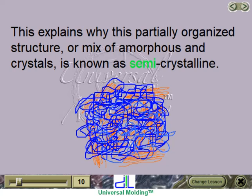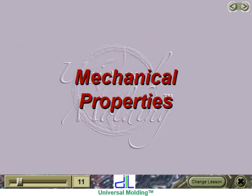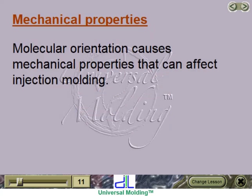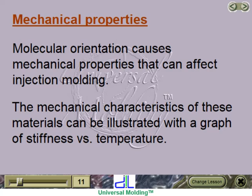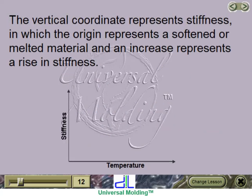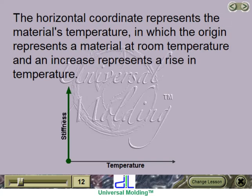This explains why this partially organized structure — a mix of amorphous and crystals — is known as semicrystalline. Molecular orientation causes mechanical properties that can affect injection molding. The mechanical characteristics of these materials can be illustrated with a graph of stiffness versus temperature. The vertical coordinate represents stiffness, where the origin represents a softened or melted material and an increase represents a rise in stiffness. The horizontal coordinate represents the material's temperature, where the origin represents room temperature and an increase represents a rise in temperature.